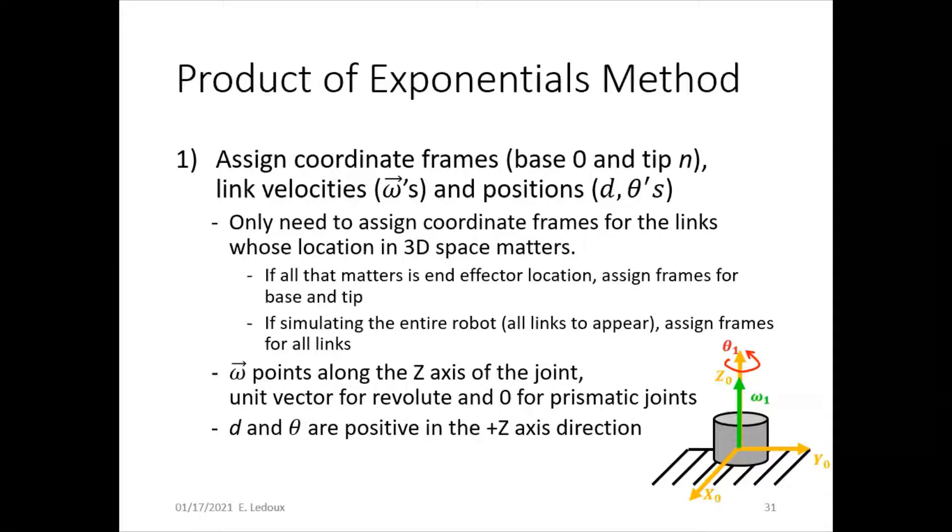The first step is to assign coordinate frames: one for the base, one for the tip, and then the link velocities and link positions. You only need to assign coordinate frames for the links whose location in 3D space matters. So if you just want to know where the tip of the robot is, only assign base and tip. But if you are simulating it like in MATLAB or something and you want to see the entire robot, then you'll need to assign a frame for every link.